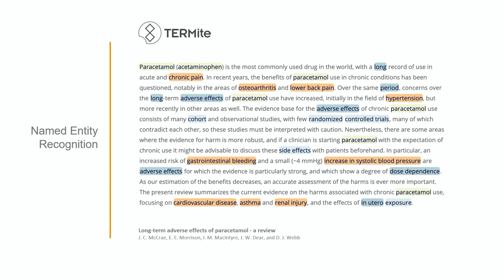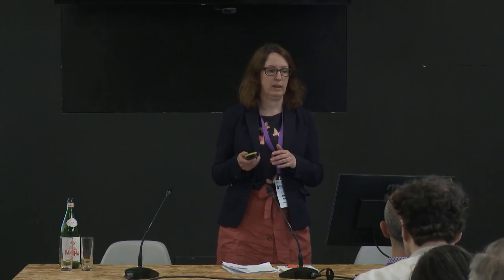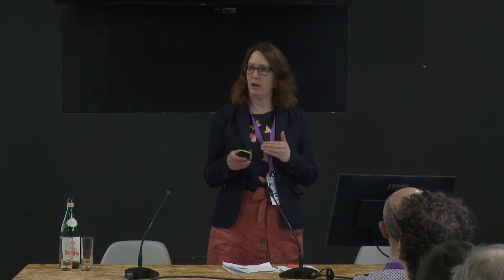What that allows you to do is take a body of text and pull out the key entities — the key bits of information that are important to you. And critically, it allows you to normalise them back to an identifier. We retain the source identifiers, so you can go back to the source and find out more information. For example, it shows you that APAP and paracetamol are talking about the same thing. But with the large number of vocabs we've got, we need to keep them up to date — there are source updates we pull in, new domains we go into, and we make new or update existing vocabularies. It's time-consuming, and we need to be able to scale that up, and we need to know that our coverage is complete.